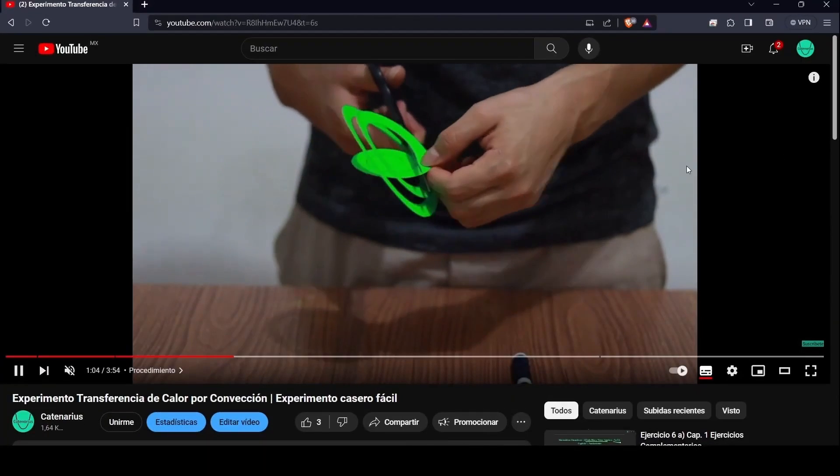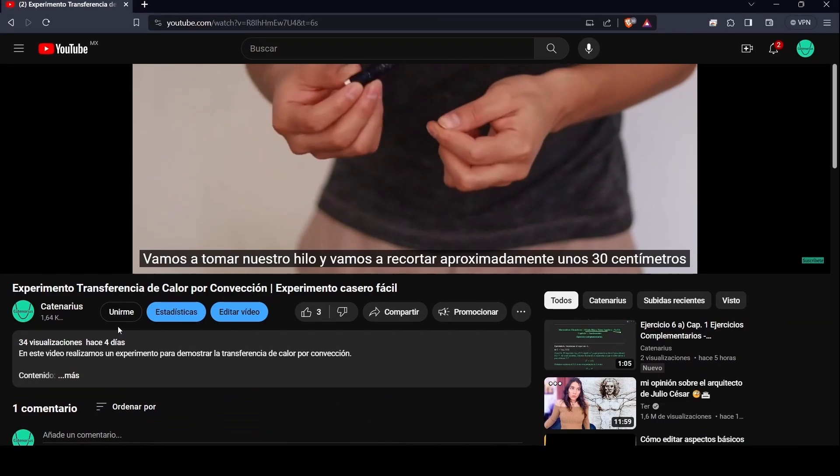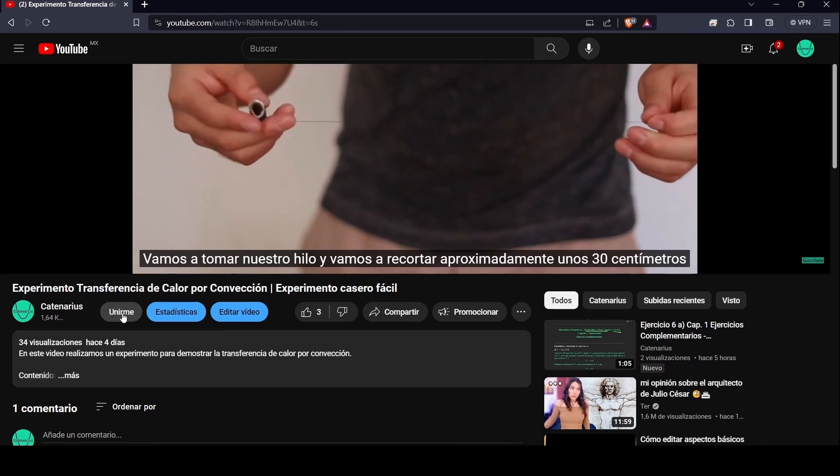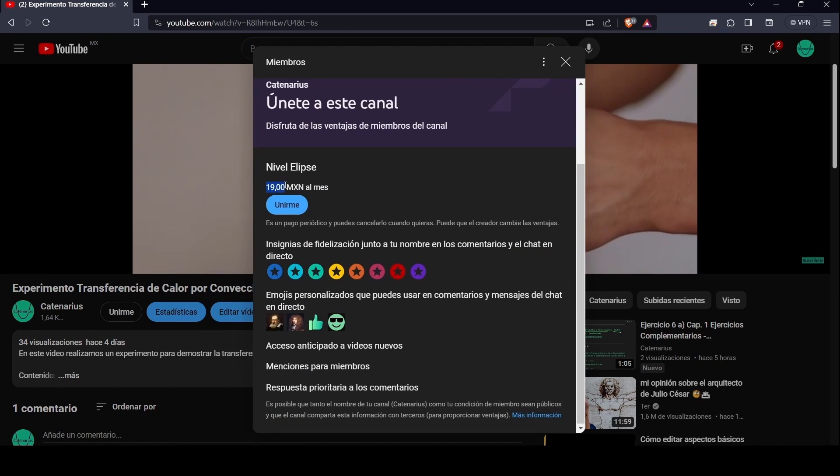And in this way we have concluded our experiment. Remember that you can become a member of the channel by clicking on the join button that appears under the title of this video. And with a small contribution of 19 Mexican pesos which is approximately equivalent to one dollar, you can have yearly access to the new videos.